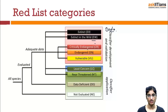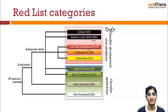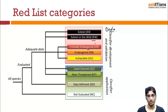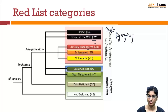Next is Critically Endangered (CR). A taxon is critically endangered when it is facing an extremely high risk of extinction in the immediate future. Any species or any taxon that meets this criterion is listed as Critically Endangered.